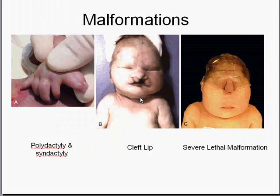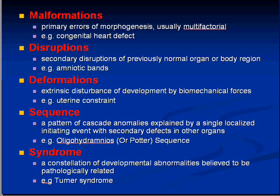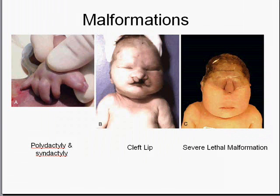We have asserted that the most common, generally used term for congenital anomalies is the word malformations. And here are some of the more common ones. A malformation, as defined previously, is an error of morphogenesis. In other words, we have tissues and organs which are not forming properly.